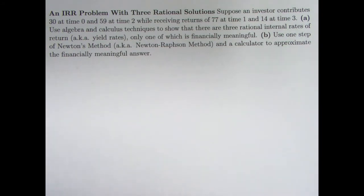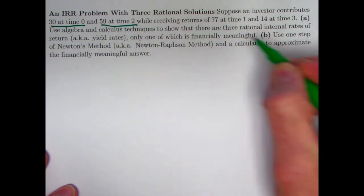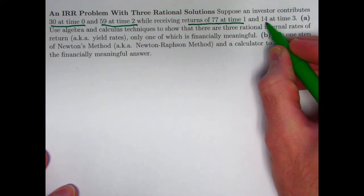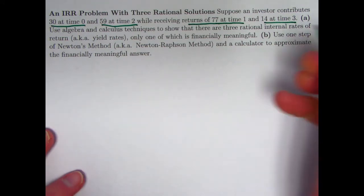We've got an investor contributing 30 at time 0, 59 at time 2, and receiving returns of 77 at time 1 and 14 at time 3. So we've got four transactions here, and the signs are going to alternate negative, positive, negative, positive. We're going to get a cubic that could have some internal rate of return solutions that maybe are not meaningful, but let's see what happens.